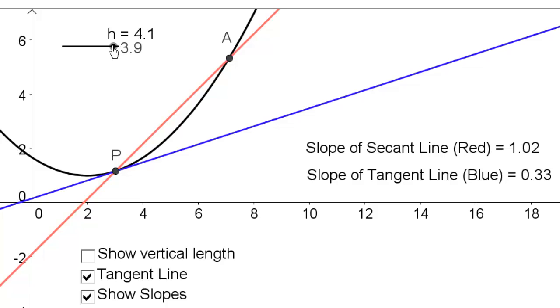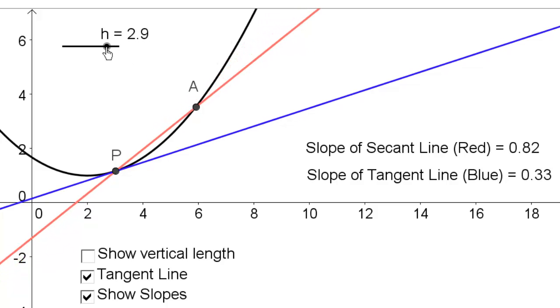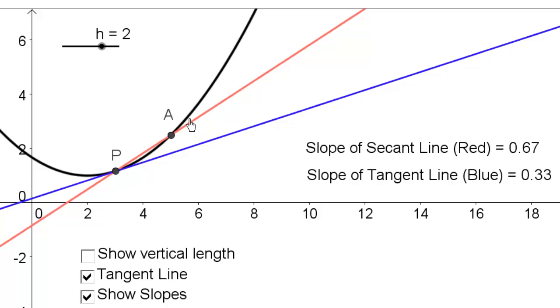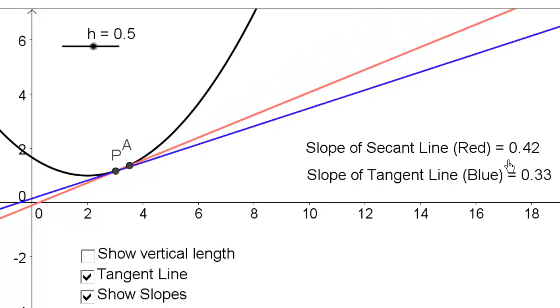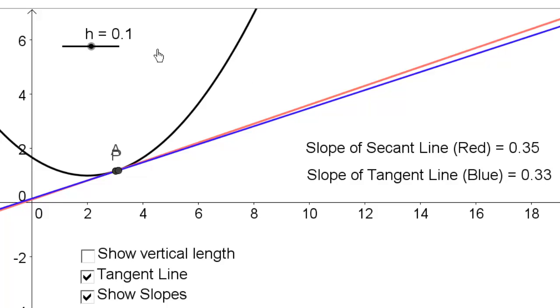Now notice what happens as my point A gets closer and closer to P. Notice that my secant line slope is 0.67. Getting even closer to P. Now it's at 0.42. And finally, when I get extremely close to P, these should be almost identical. So 0.35, pretty close to 0.33.